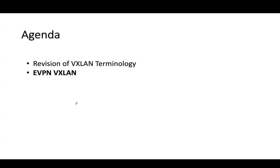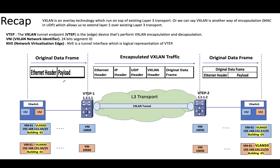Hello everyone, welcome back. Today we are going to discuss EVPN VXLAN. In the last session we discussed what VXLAN is, why VXLAN as a solution, and how a VXLAN tunnel is established. VXLAN is an overlay technology that allows us to extend a Layer 2 domain over Layer 3 transport. As per this diagram, we are extending VLAN 20 from building 1 to building 5 over Layer 3 transport.